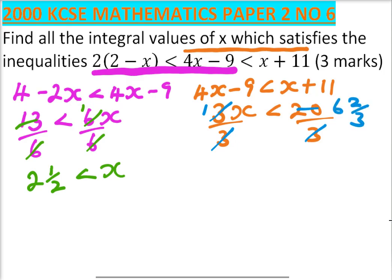So our x is less than 6 and 2 thirds. We can combine the two: x is less than 6 and 2 thirds and it is greater than 2 and a half.